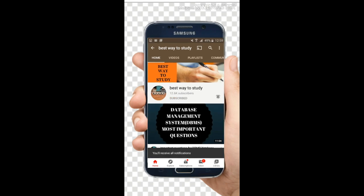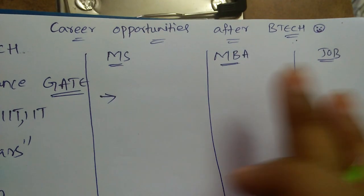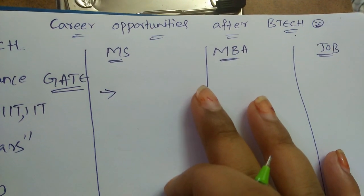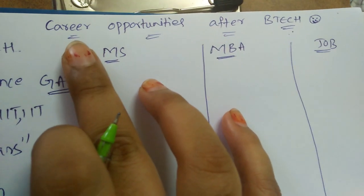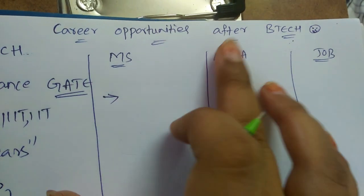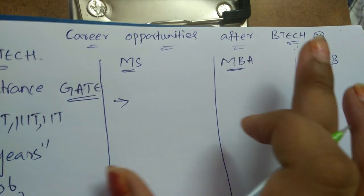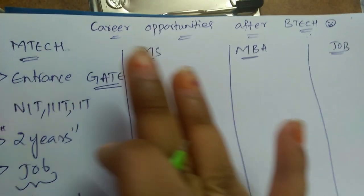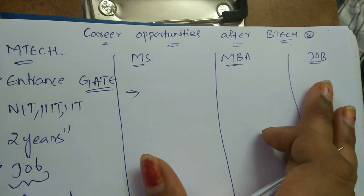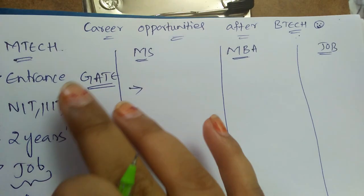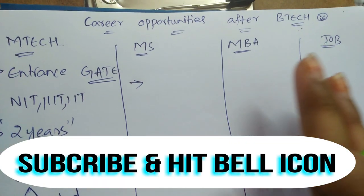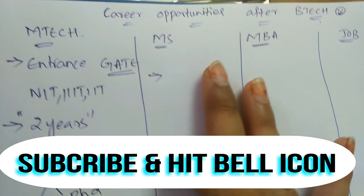Subscribe and hit the bell icon for more notifications. Hi friends, welcome back to Best Way to Study. This is the most requested video from you people. In this video, let's discuss the multiple career opportunities available after completion of your BTech. After BTech you can go for MTech, MS, MBA, or you can go for job based on your interest. Let me say how your career will be if you go for MTech, MS, MBA, or job.